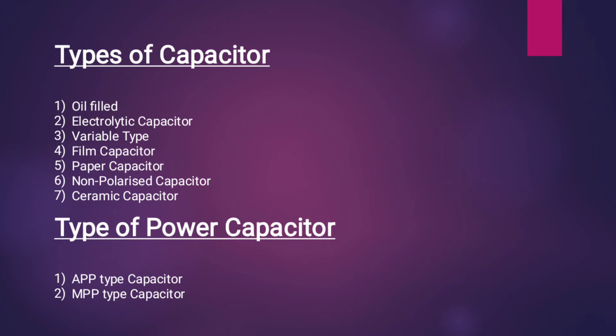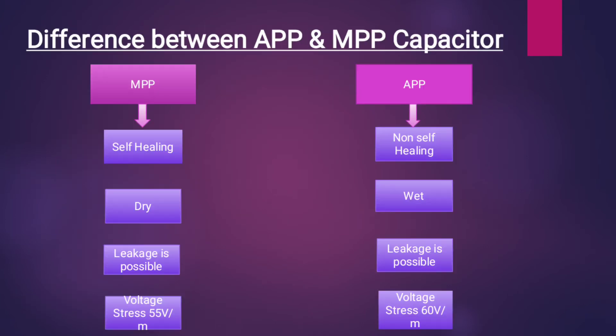APP means aluminum polypropylene capacitor and MPP means metalized polypropylene capacitor. The differences: MPP is self-healing, APP is non-self-healing. MPP is dry type, APP is wet type. Leakage is not possible in MPP but leakage is possible in APP. Voltage stress in APP is 55 volts per micrometer and in MPP it is 60 volts per micrometer.